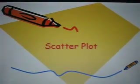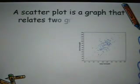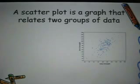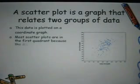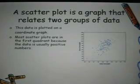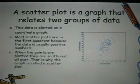Today we are going to be learning about scatterplots. A scatterplot is a graph that relates two groups of data. This data is plotted on a coordinate graph. Most scatterplots are in the first quadrant because the data is usually positive numbers. When the points are plotted, they are scattered all over — that is why the graph is called a scatterplot.